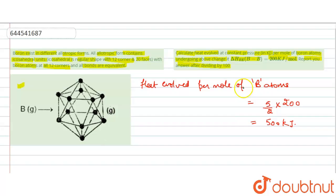We have to report our answer after dividing it by 100, so our correct answer will be 500 divided by 100 kilojoule. It will be equal to 5 kilojoule, which will be our answer.